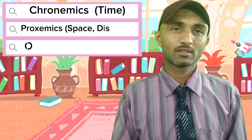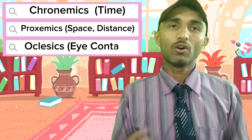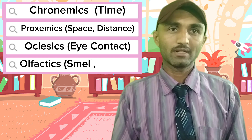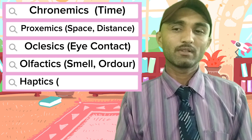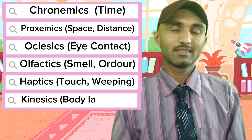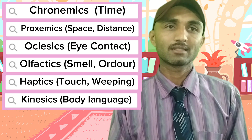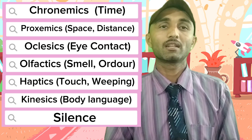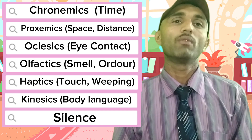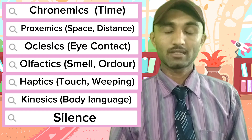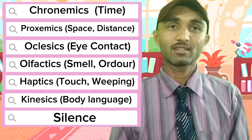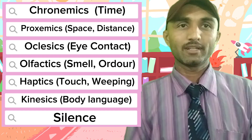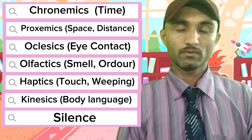The types are: first, chronemics; second, proxemics; third, oculesics; fourth, olfactics; fifth, haptics; sixth, kinesics; seventh, chromatics; and eighth, silence. There are many other kinds of nonverbal communication, but these are the most important ones we will discuss.